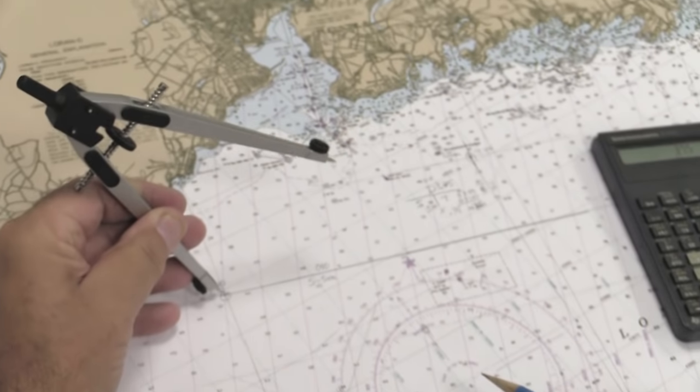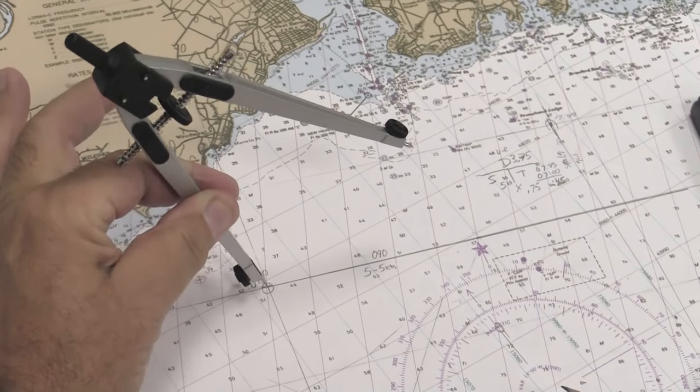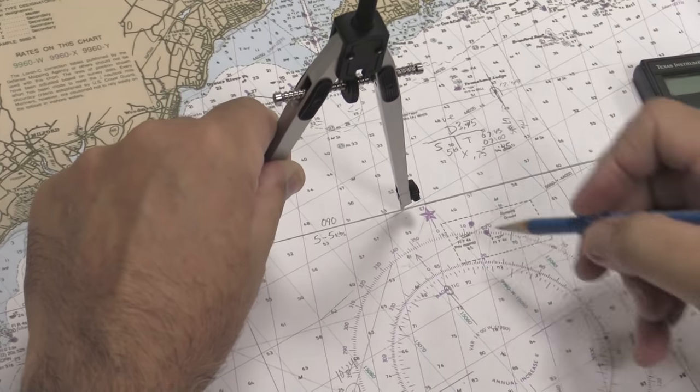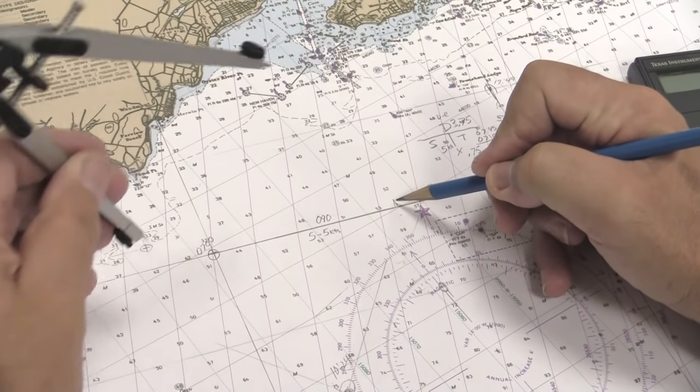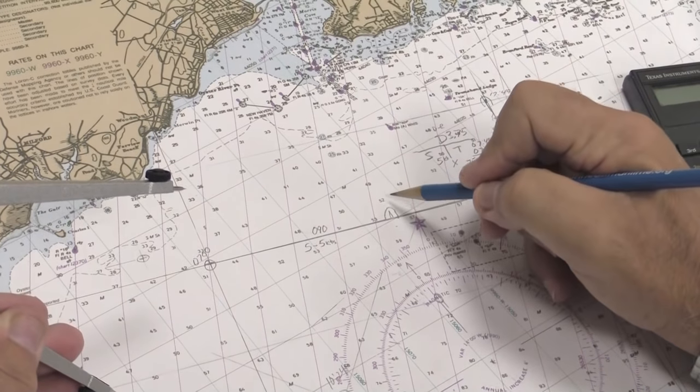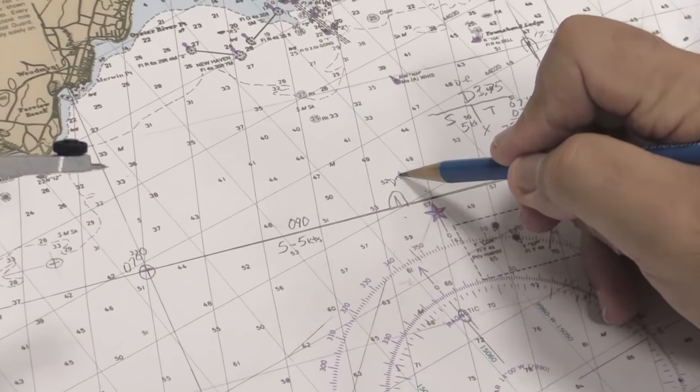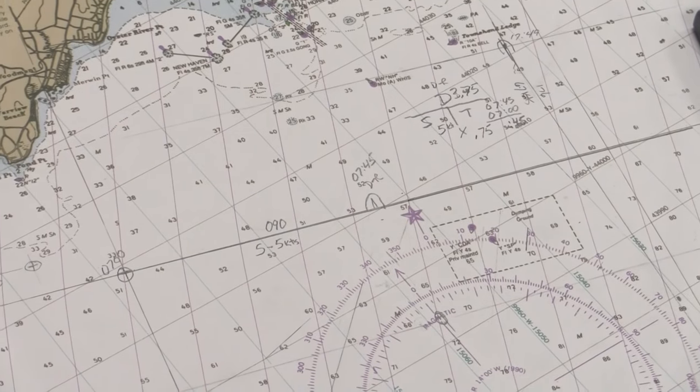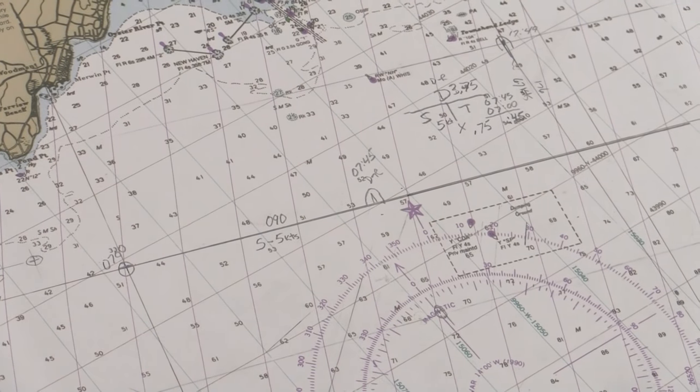We put one end of the divider at our starting position at 0700. We take the other end of the divider, put it on our course line, make a mark. That becomes our DR position at 0745.